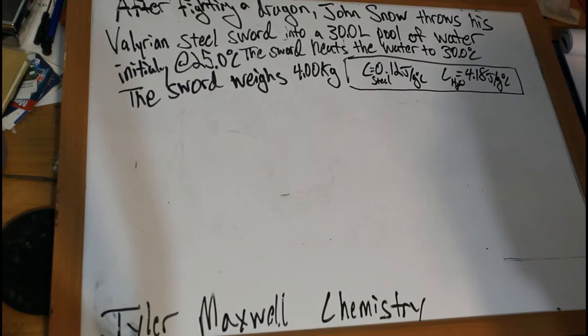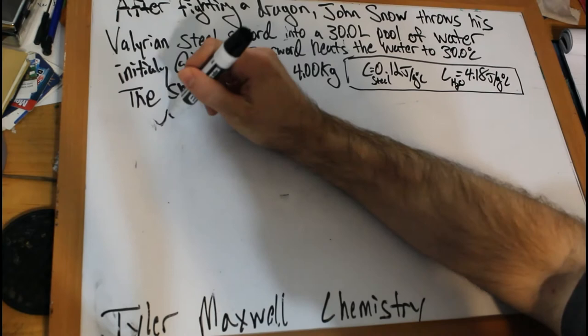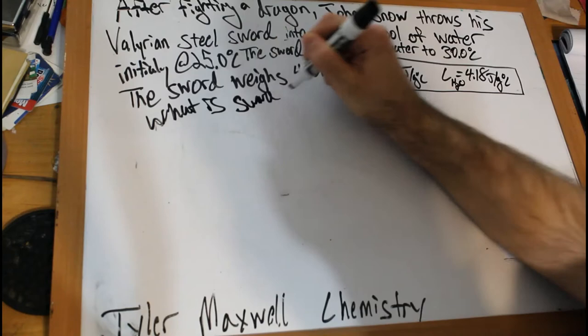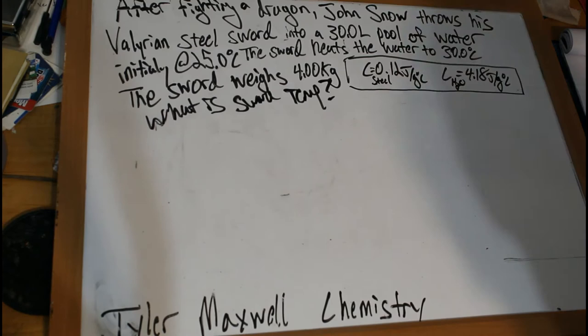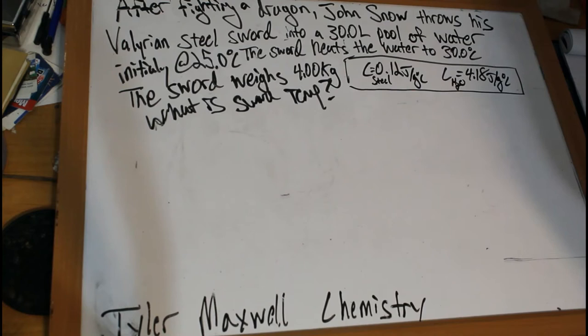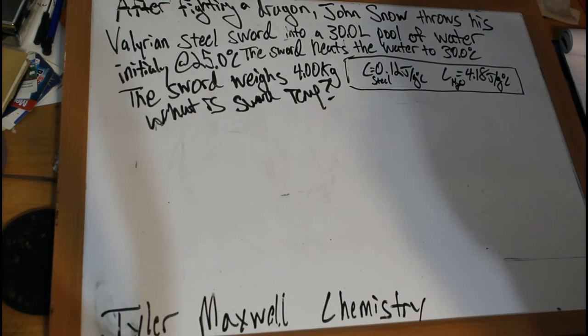So what was the temperature of his sword? That's what Jon wants to know. He knows the heat capacity of Valyrian steel is 0.12 joules per gram degree Celsius and the heat capacity of water. Basically what's happening here is all of the energy that the sword had was being transferred to the pool of water. So if we know how much energy is transferred to the pool of water, then we could know how much energy the sword had. Thereby we could solve what was the temperature of the sword. The more energy that the sword had, the higher the temperature it would be.